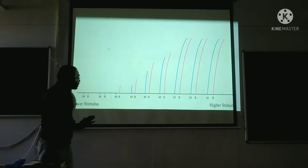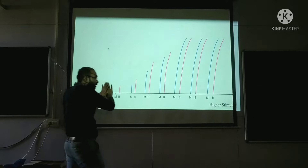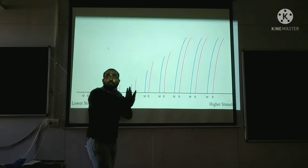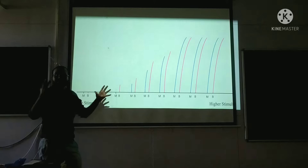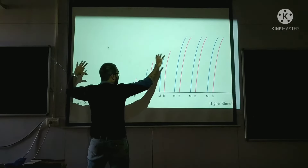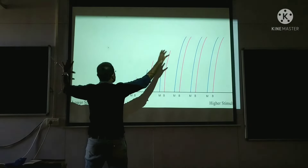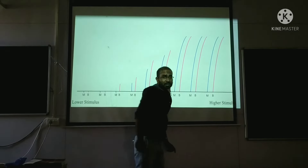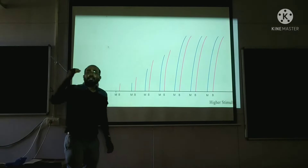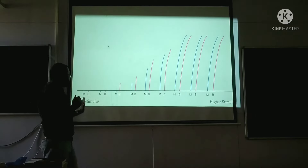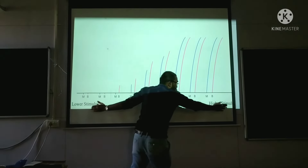This is the whole graph. We have taken recordings at different primary coil and secondary coil distances — when the coils were far apart and when they were brought closer — and we have basically increased the strength of stimulus from lower to higher stimulus progressively.